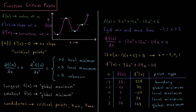Let's do an example. We have f(x) = 3x⁴ + 4x³ − 12x² + 6. What we want to do is find the minimum and maximum values of this function between negative 3 and 2, inclusively. The first thing we'll do is find the derivative of this function with respect to x and set that equal to 0 to solve for our critical points.